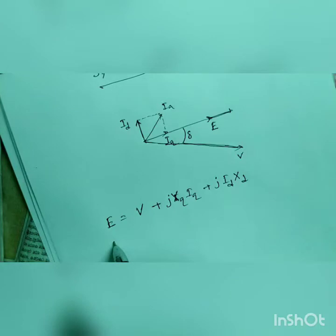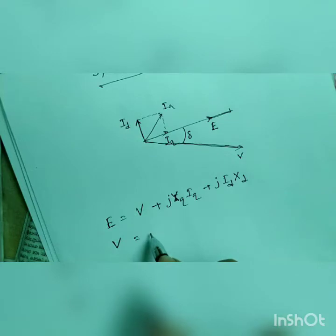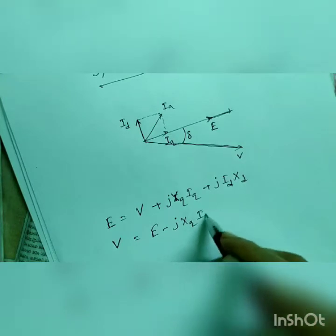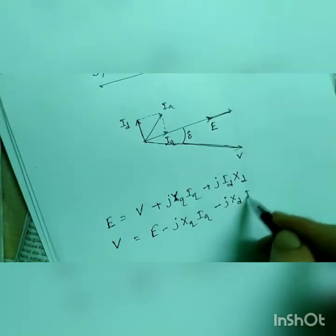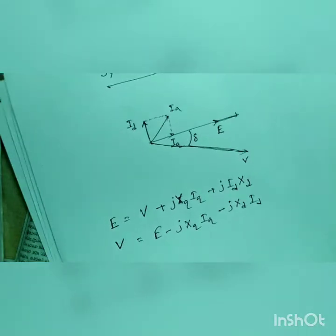What will be V? V will be just E minus J of xq iq minus J of xd id.